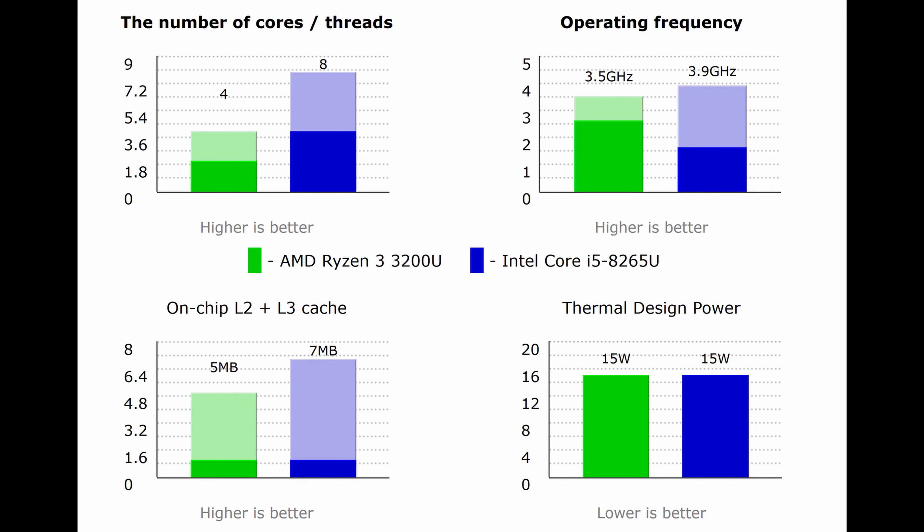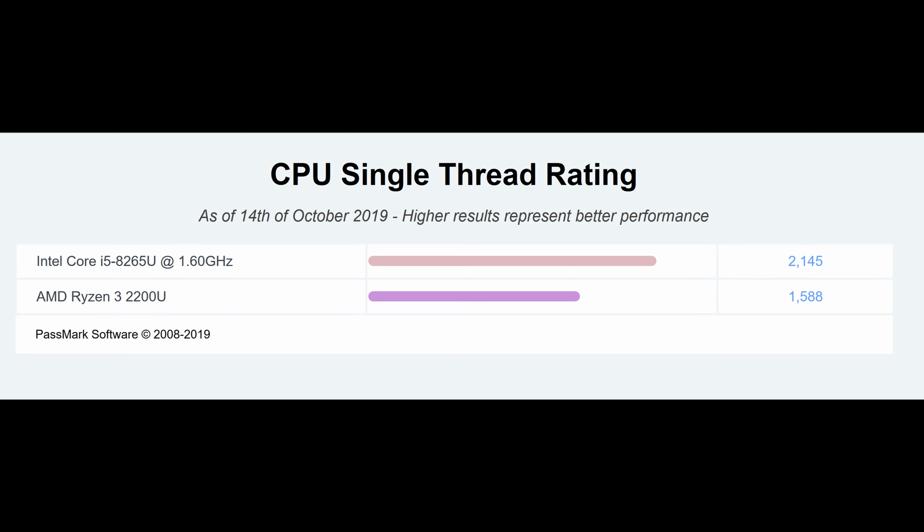If you look at the maximum turbo frequency, the Intel processor is capable of going all the way to 3.9GHz whereas the AMD processor goes to 3.5GHz. So what does all this mean? These are all technical specs, so let's simplify the performance by looking at some benchmarks. This is the Passmark single-thread performance of both CPUs.